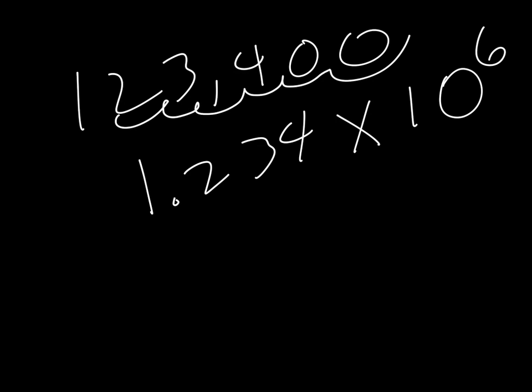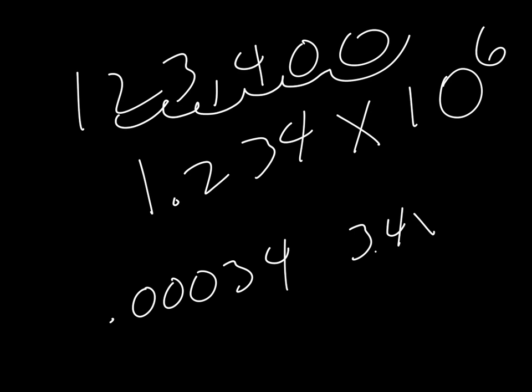Or I can express really small numbers, so like .00034 as 3.4 times 10 to the — 1, 2, 3, 4 — negative 4.